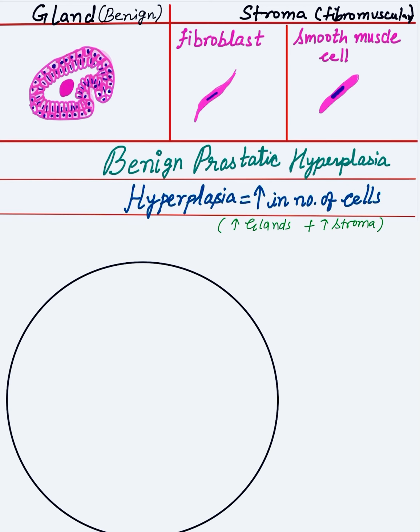In the center of the gland you can draw prostatic secretions like corpora amylacea. In the diagram of the gland you will also see infolding — this is papillary infolding. When the gland is proliferating it will show papillary infolding. This is how you draw a gland. The stroma is fibromuscular, meaning there are fibroblasts as well as smooth muscle cells.